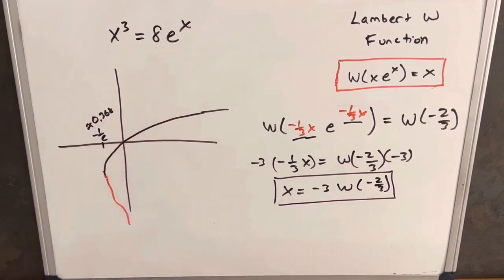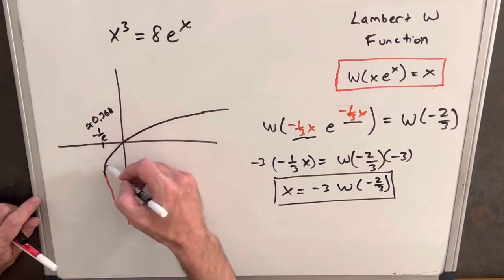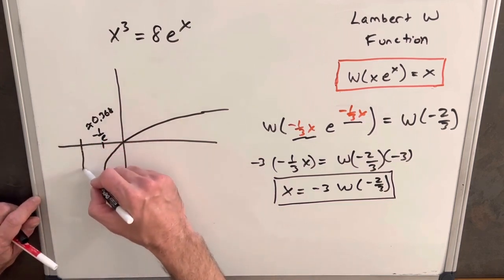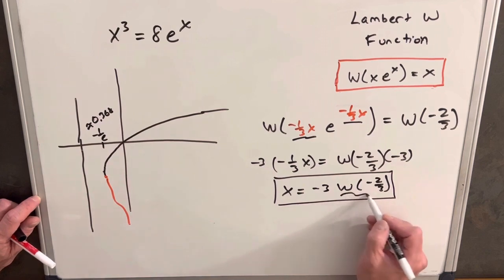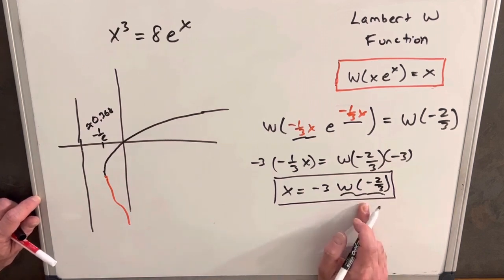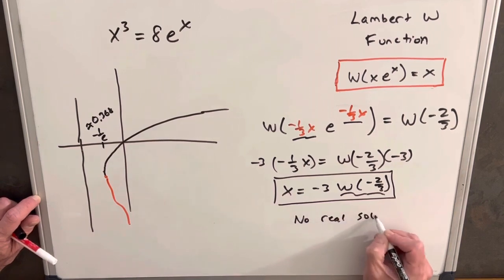So we're actually out here somewhere. In this range, there's no real part of the Lambert W function, so this piece is going to be complex. The whole thing is a complex solution, so we have no real solutions.